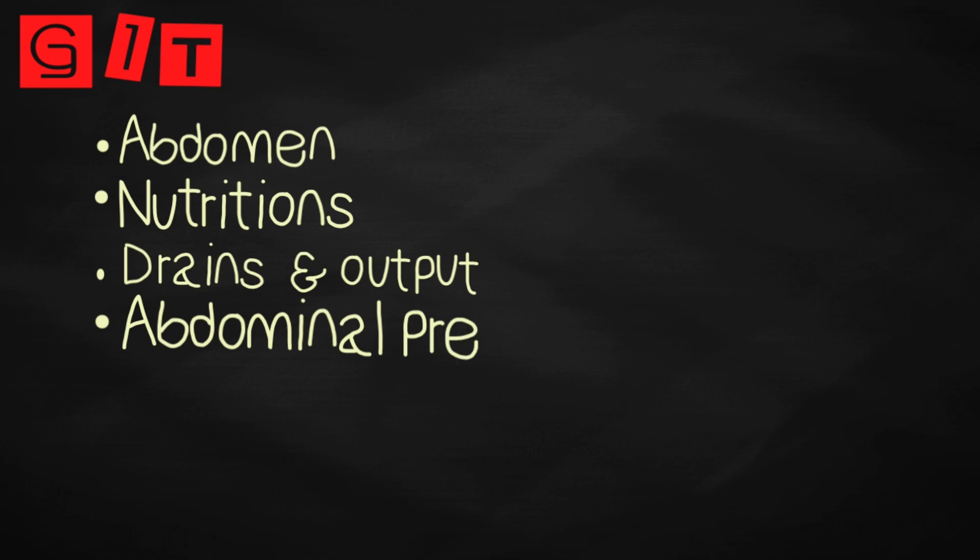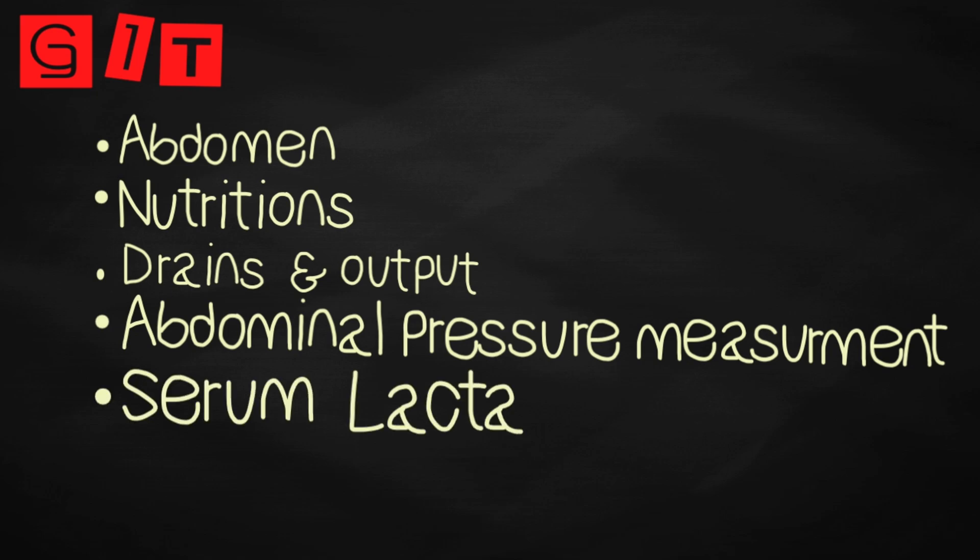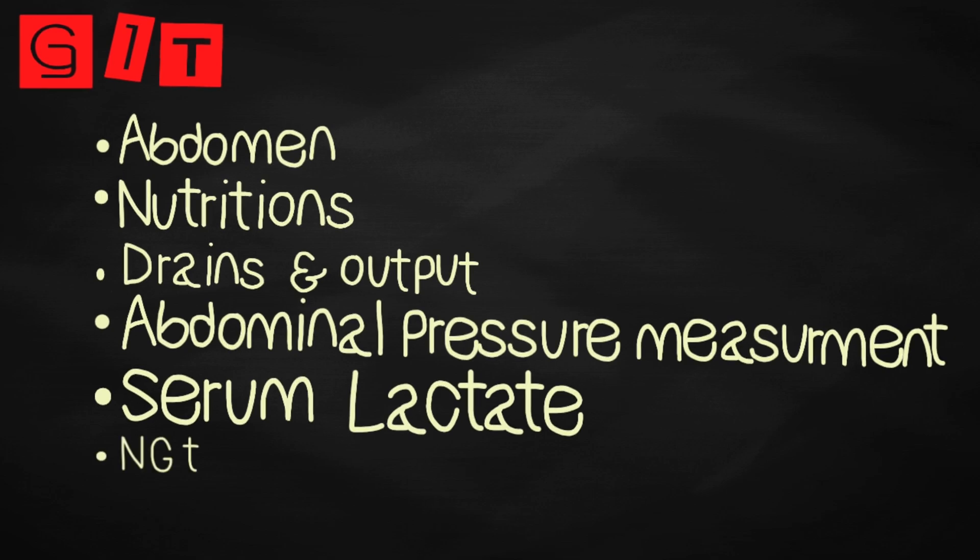Abdominal pressure measurements may be required if the abdominal compartment syndrome is suspected upon examination. If available, the serum lactate provides a non-specific indicator of pathologies such as bowel ischemia that are difficult to detect clinically. Nasogastric tube placement should be confirmed on a daily basis by pH testing or chest x-ray if being used for feeding. The NG tube should be removed as soon as it is no longer needed.